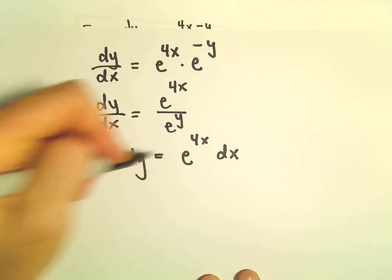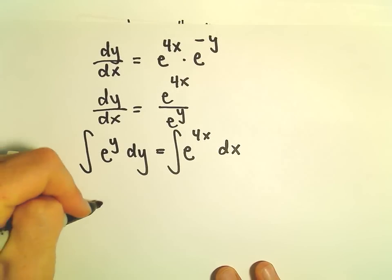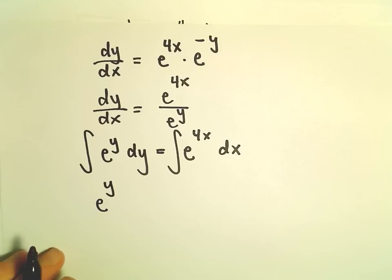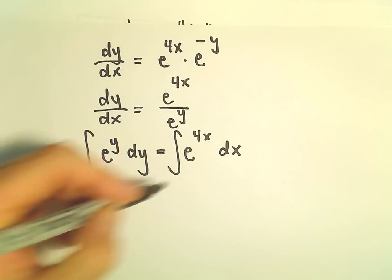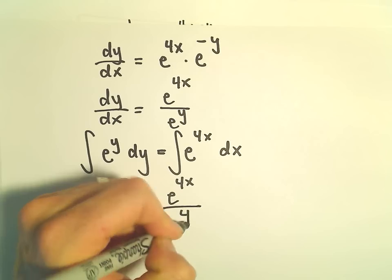Now we're going to integrate both sides. The antiderivative of e^y is just e^y.